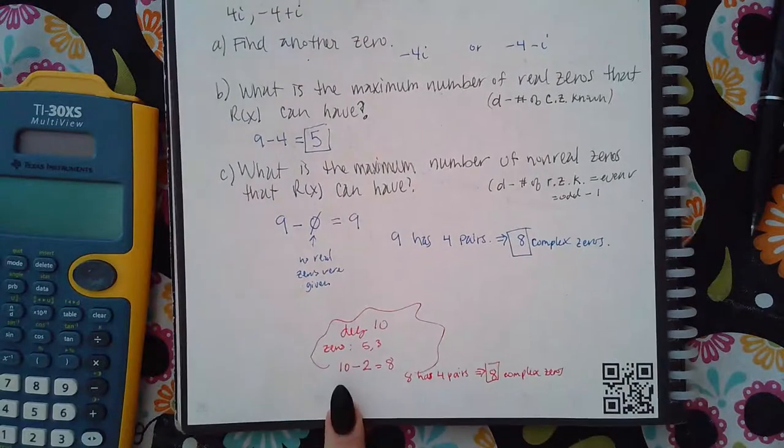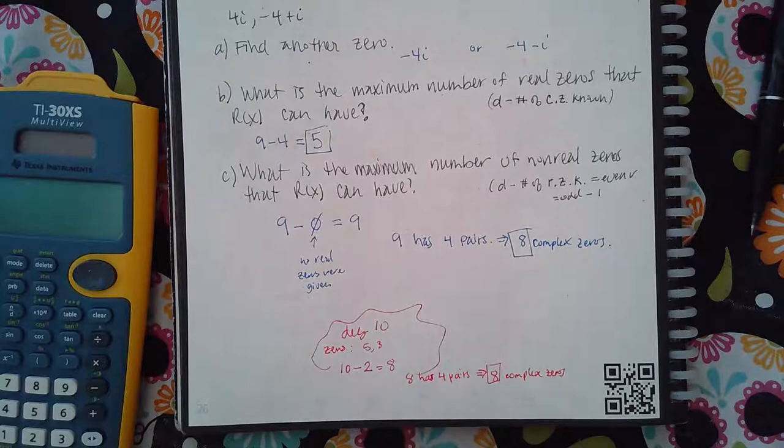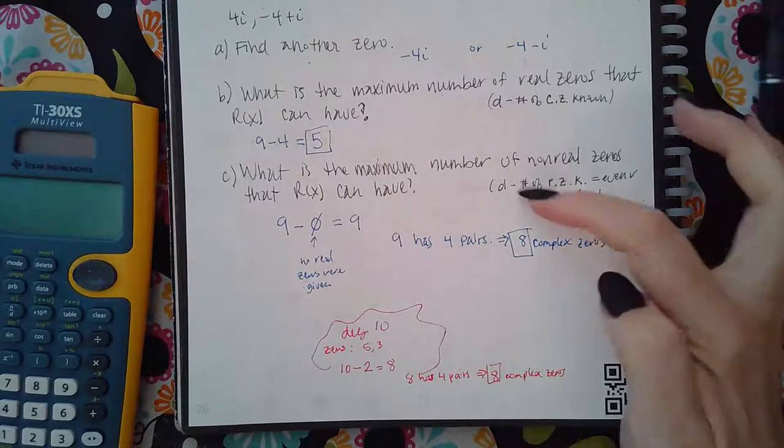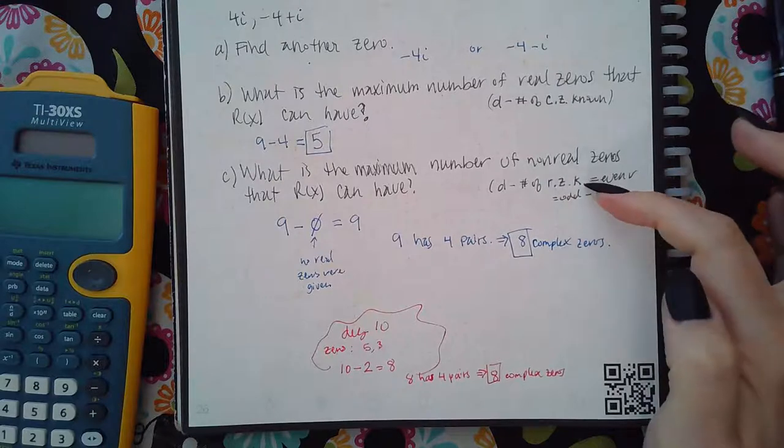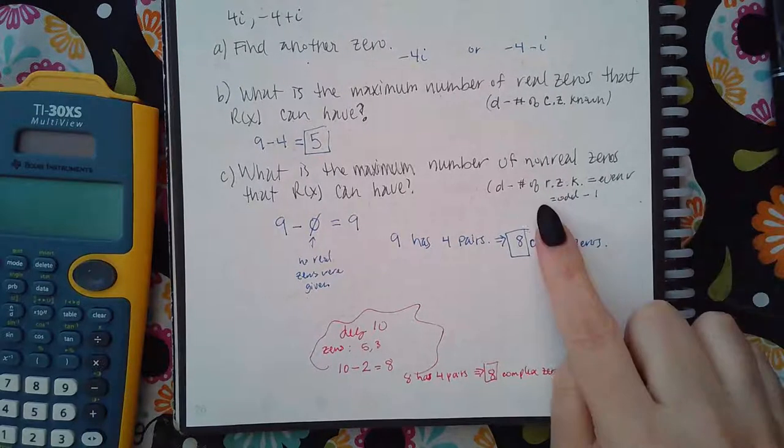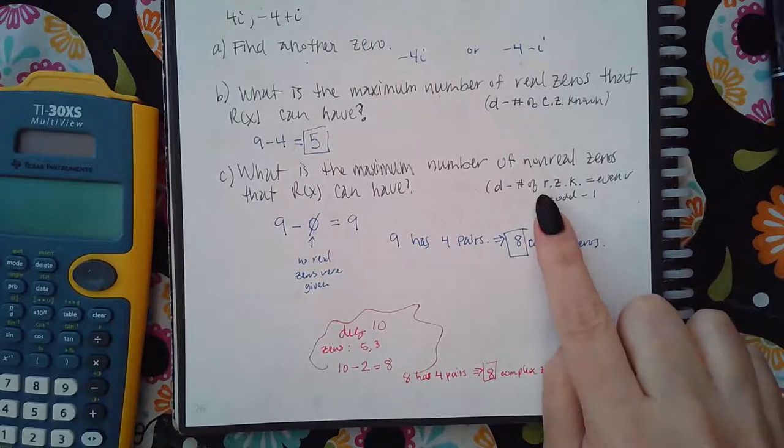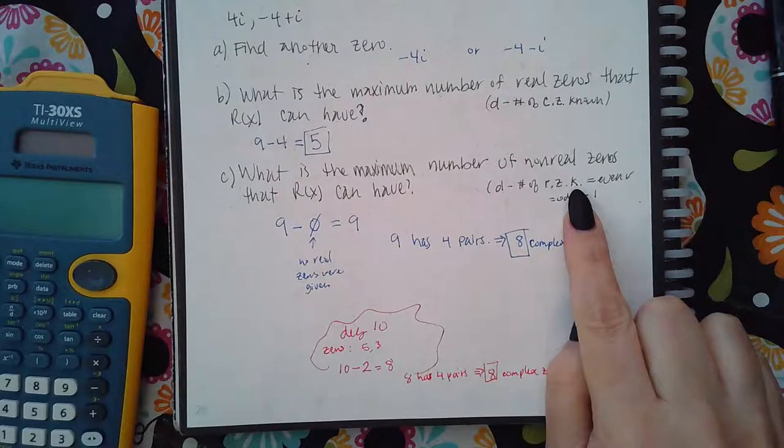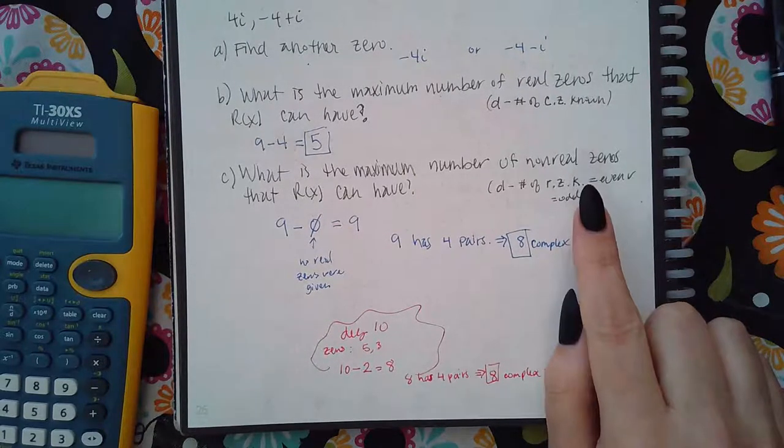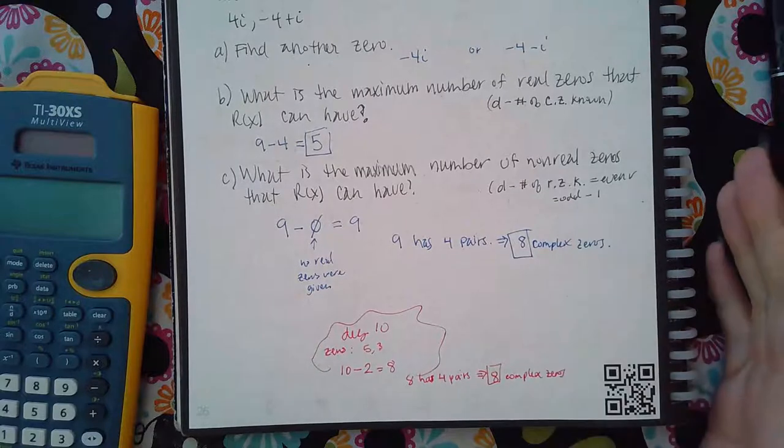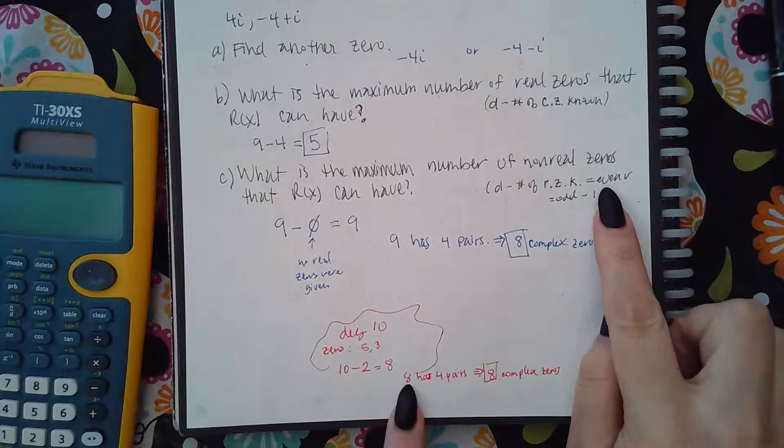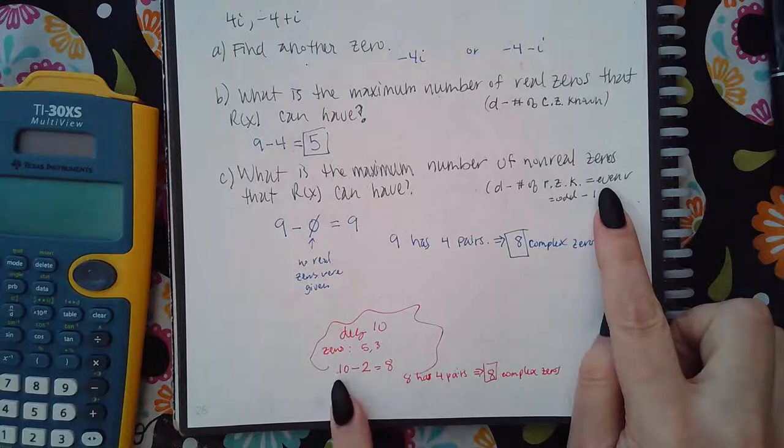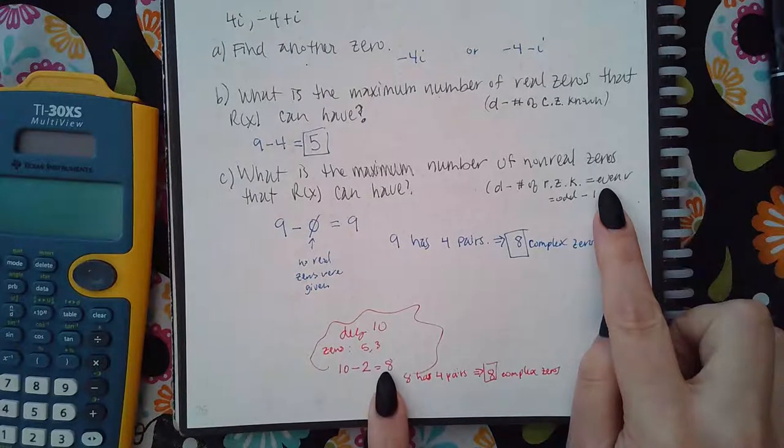So after I did the subtraction—once I took the degree and subtracted the number of real zeros known (that's what RZK stands for, the real zeros that were given to me)—you're going to have two things happening. You're either going to have an even number, like when I subtracted 10 minus 2 and got 8.